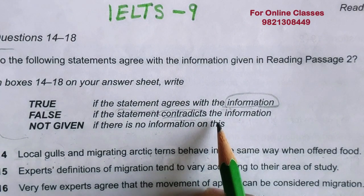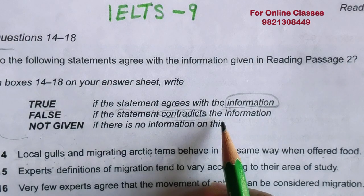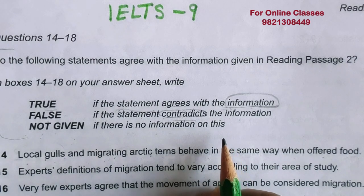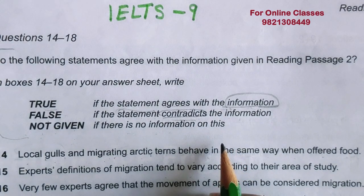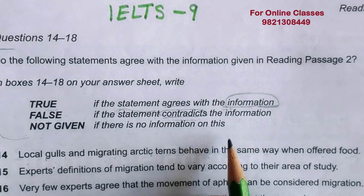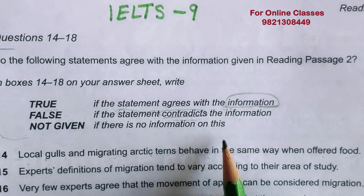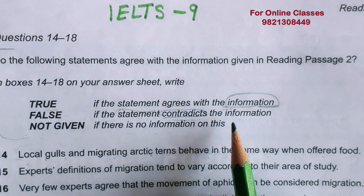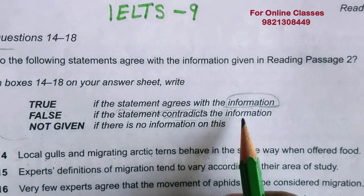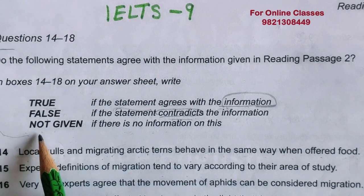For example: I say 'I'm going to school by car' — that is the question statement. If the passage says 'I'm going to school by a different vehicle,' it is contradicting, because one thing is missing. Both say 'going to school,' but the means of transport differs — so the statement contradicts, and the answer is FALSE.